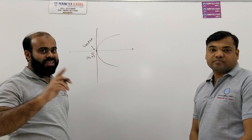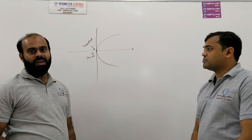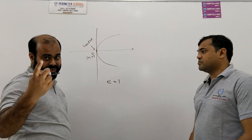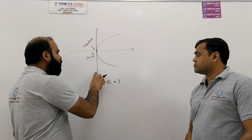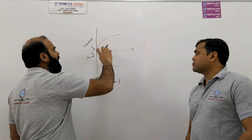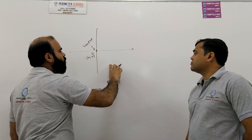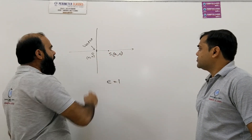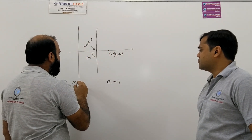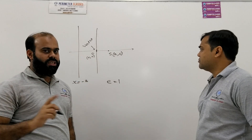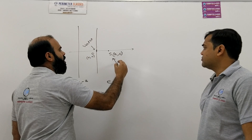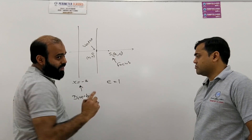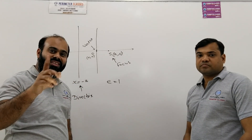In case of ellipse, eccentricity is less than 1. In case of parabola, eccentricity is equal to 1. Please go through the videos of ellipse — you will better understand. Eccentricity is 1, which means if we take a point called the focus with coordinates (a, 0), and a line called the directrix with equation x = −a, we have a focus and directrix, just like in ellipse, but eccentricity here is 1.